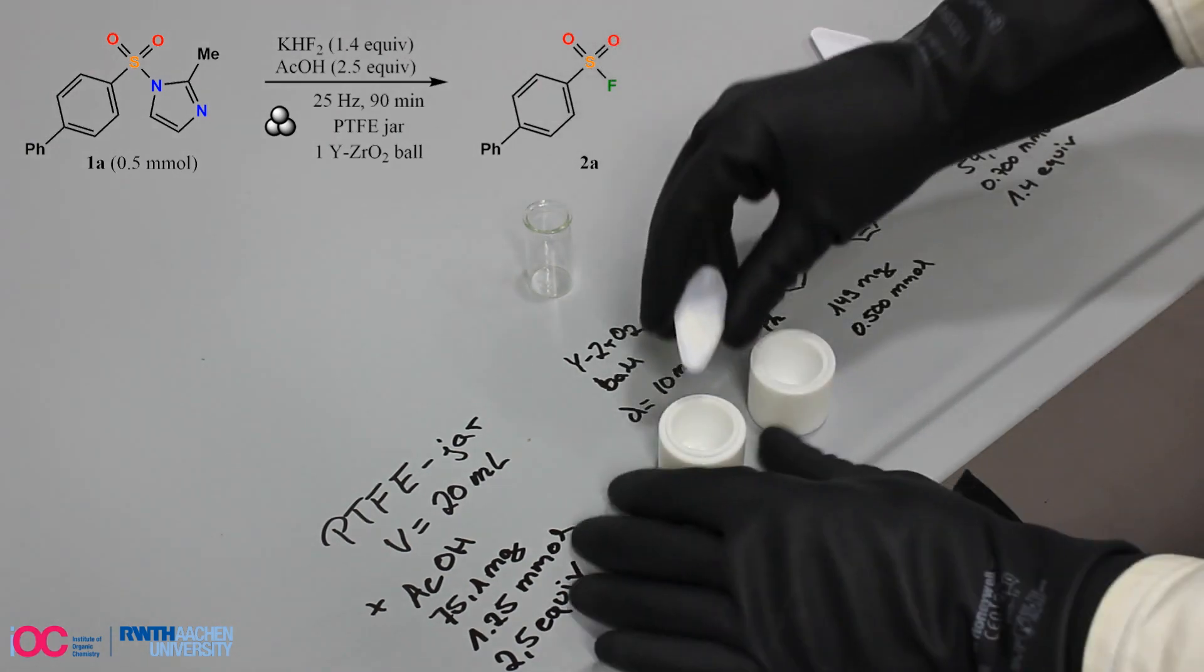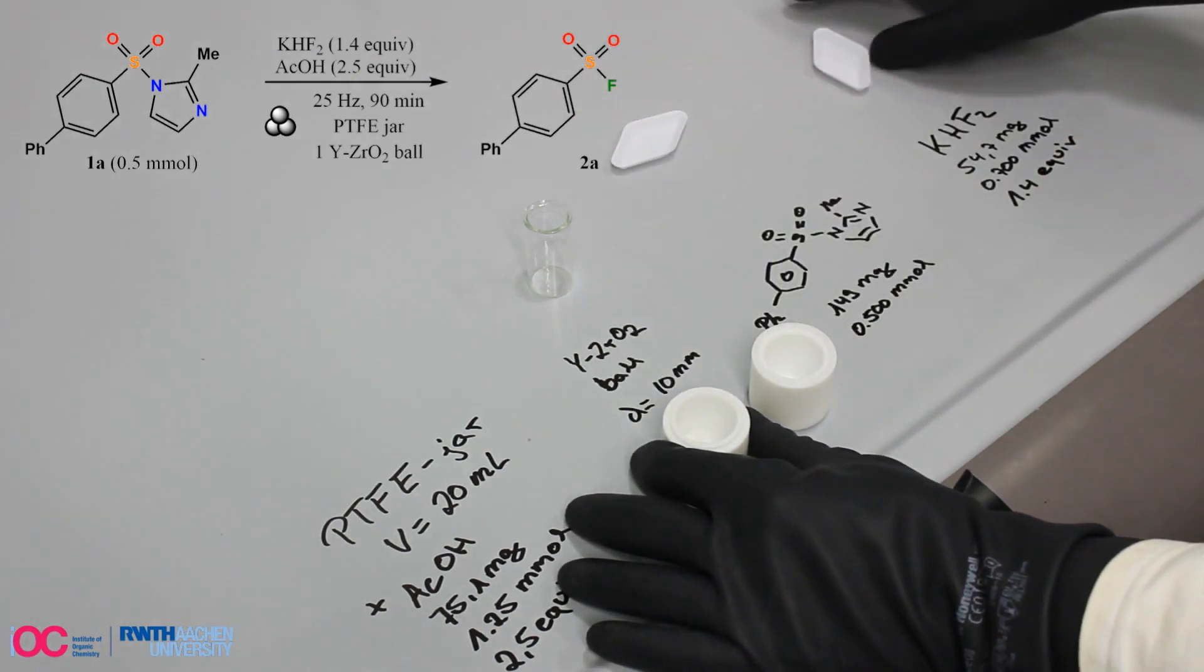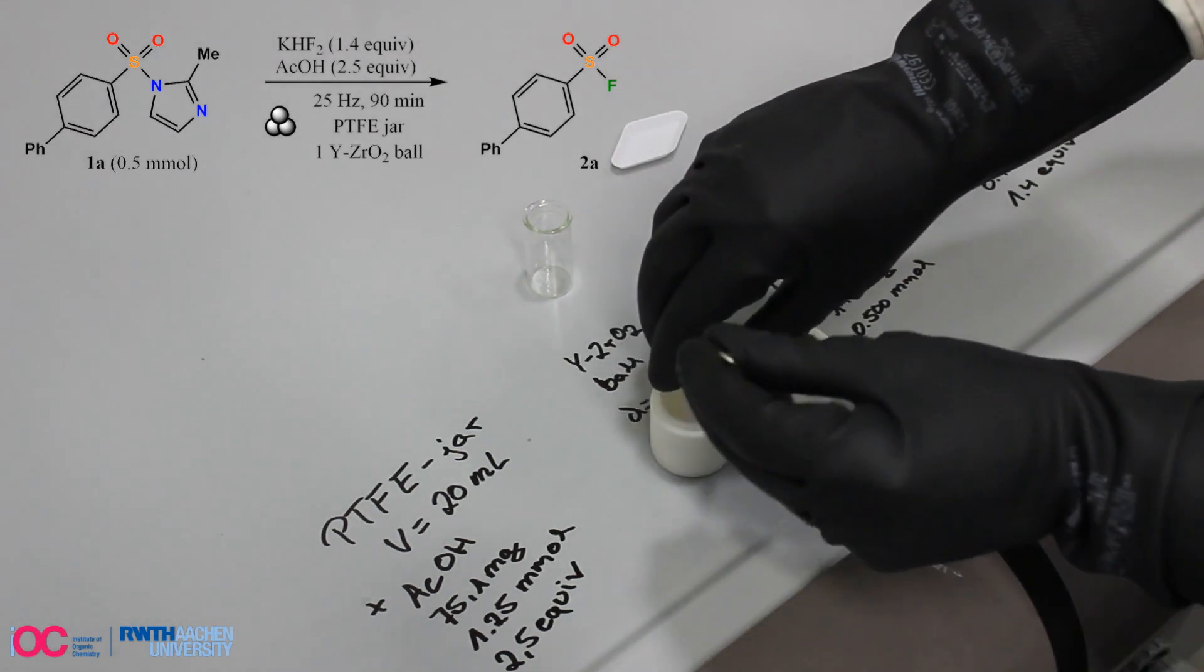The acid is already loaded in a PTFE milling jar. Then a yttrium-stabilized zirconia milling ball is added and used to distribute the liquid acid on the surface of the milling equipment.